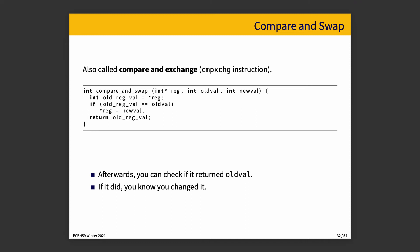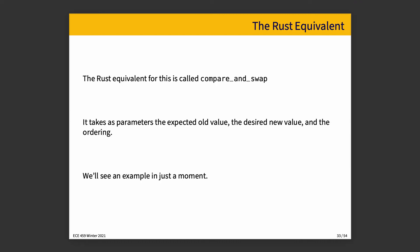So compare-and-swap: given a value, check it, see if it's the same as the old expected value. If it is, we can set the new value; otherwise we don't do that. Either way we return the old value that we read. So you check if it returned the value you were expecting — if it did, you know you changed it; if not, then you know what the new expected value would be and you try again. The Rust equivalent is compare_and_swap. It takes as parameters the expected old value, the desired new value, and the ordering.